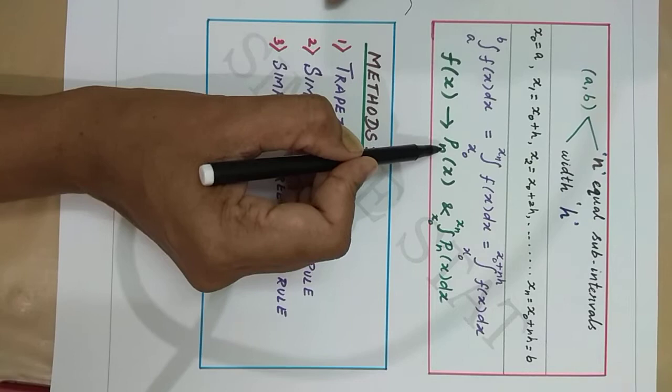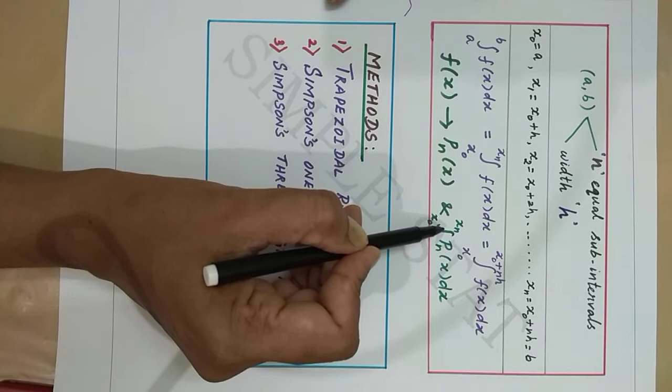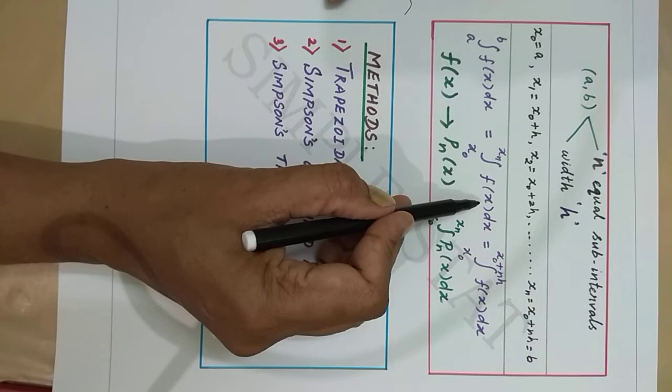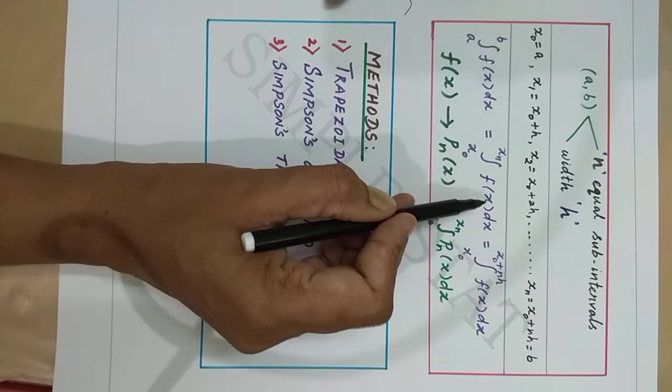We replace f(x) by an interpolating polynomial pn(x) and evaluate integral from x0 to xn of pn(x) dx, which is approximately taken as the value for integral from x0 to xn of f(x) dx.